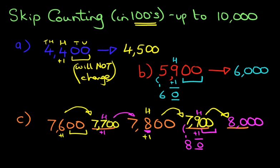So the sequence reads 7,600, 7,700, 7,800, 7,900, and finally 8,000. Counting in hundreds is very simple.